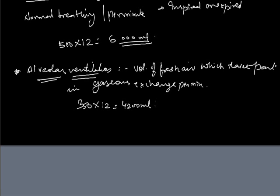For today we stop here. We have discussed spirometry — all types of lung volumes and capacities. In the next class we will discuss the exchange of gases: how gases that have reached the alveoli are exchanged into the blood. Till then, bye bye. Have a nice day. Thank you.